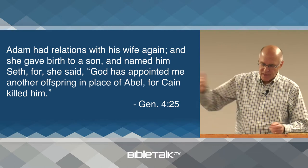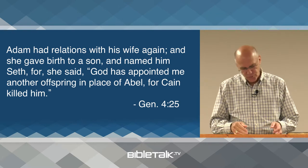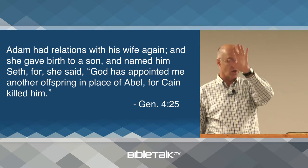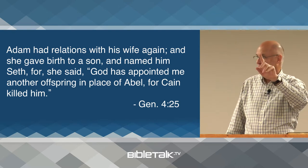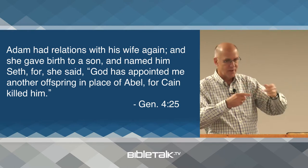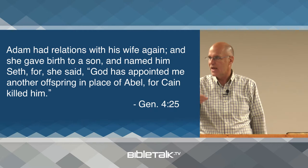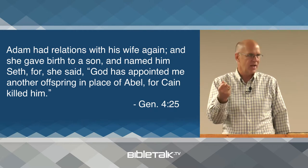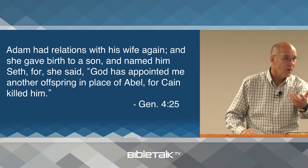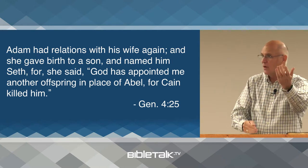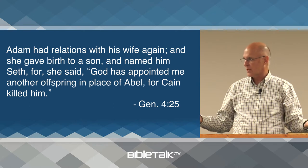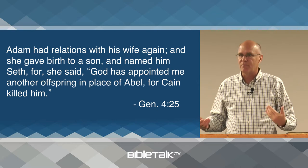Seth is a replacement for Abel, another person through whom the promise would be fulfilled. Remember, Abel was a righteous man who called on God, and Abel was killed. Adam and Eve knew the promise would come through their children. They realized it wasn't Cain because his attitude was sinful and rebellious. So they were thinking, it'll be Abel — and then all of a sudden Cain kills Abel. Where's the promise going to come from now? How is God going to bring that person?